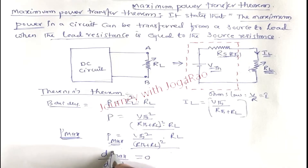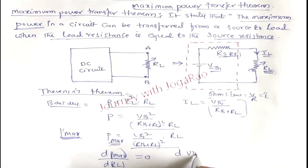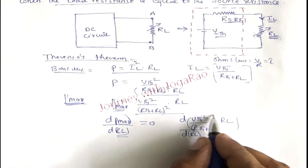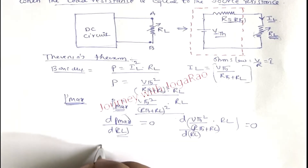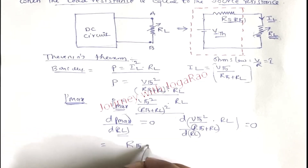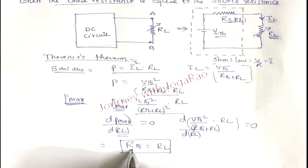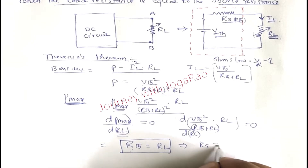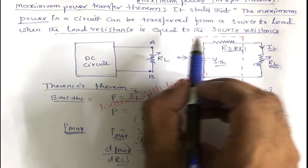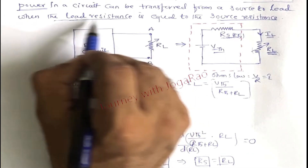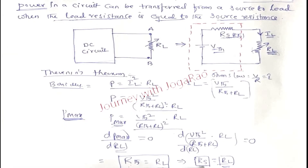Taking the derivative of V_Thevenin² / (R_Thevenin + RL)² × RL with respect to RL and setting it equal to zero, after simplifying, we get the condition: R_Thevenin = RL. So the theorem states that source resistance equals load resistance for maximum power transfer.